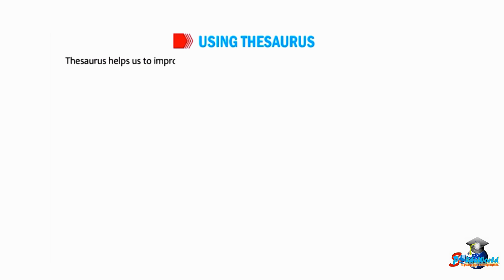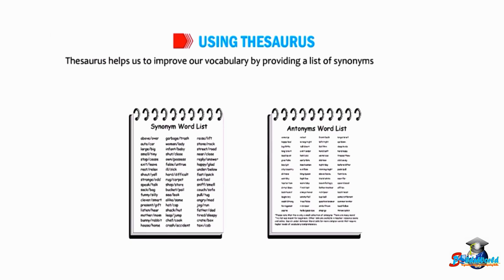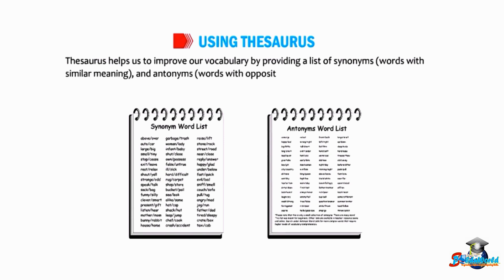Let us understand the use of Thesaurus in MS Word. Thesaurus helps us to improve our vocabulary by providing a list of synonyms — words with similar meaning — and antonyms — words with opposite meaning — for any word.